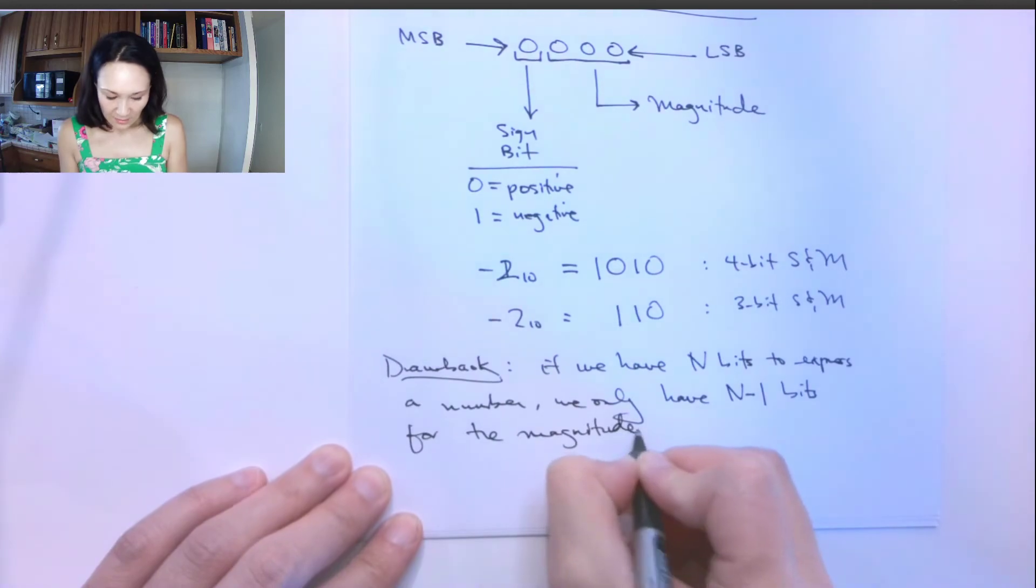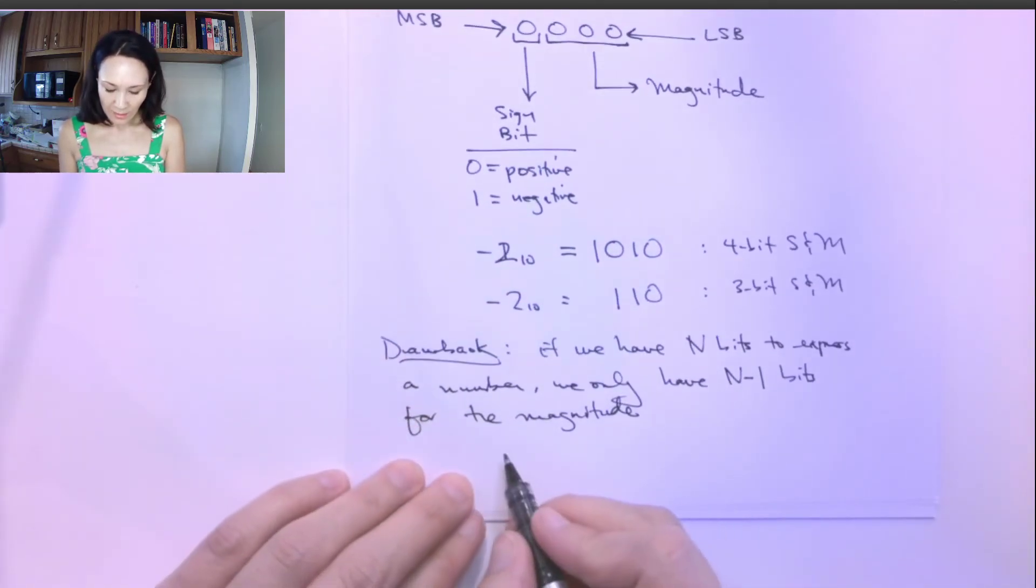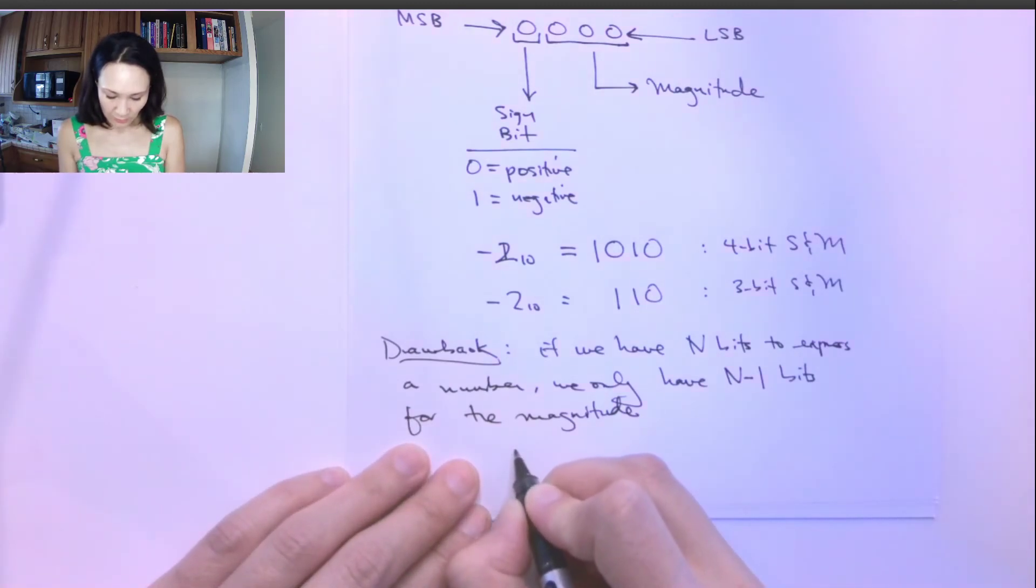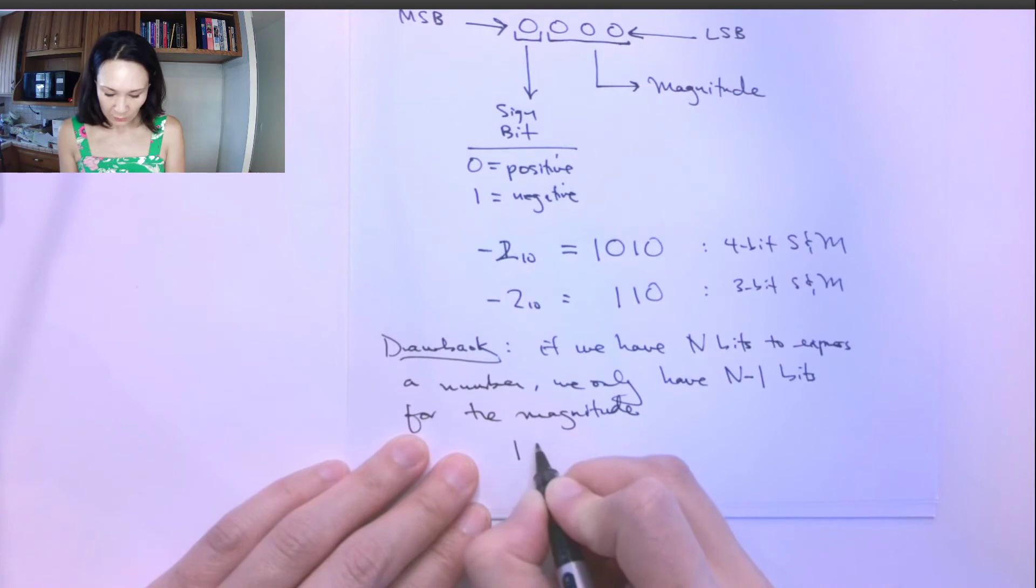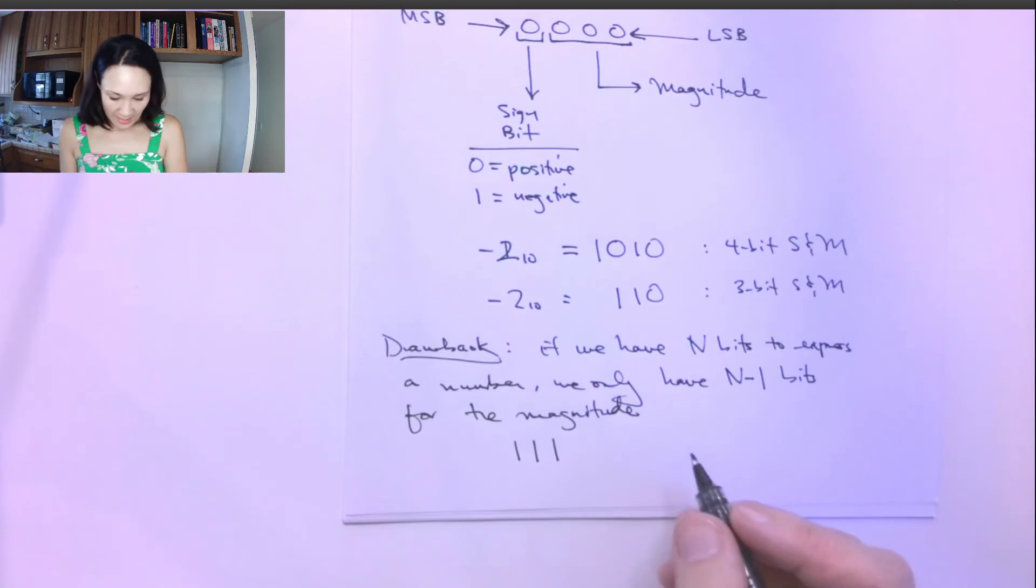So that means we need more bits to represent smaller numbers. For example, if we had three bits at our disposal, the largest number that we could express with three bits would be seven in binary. But now...